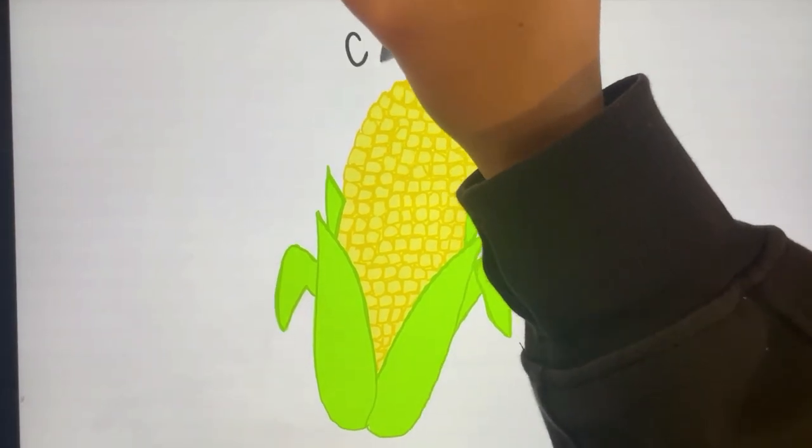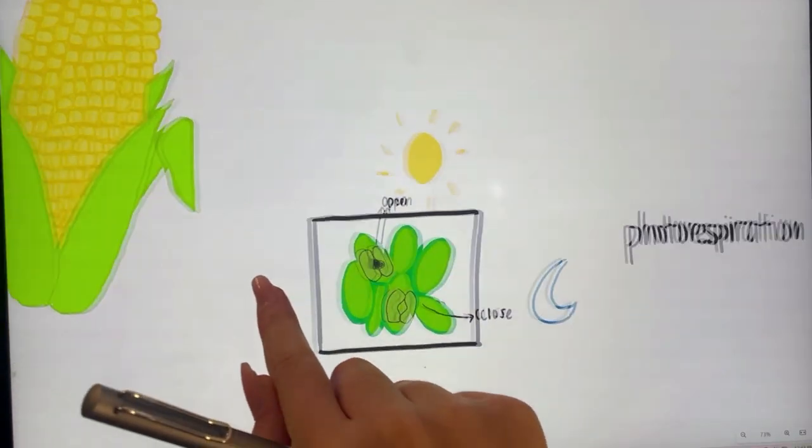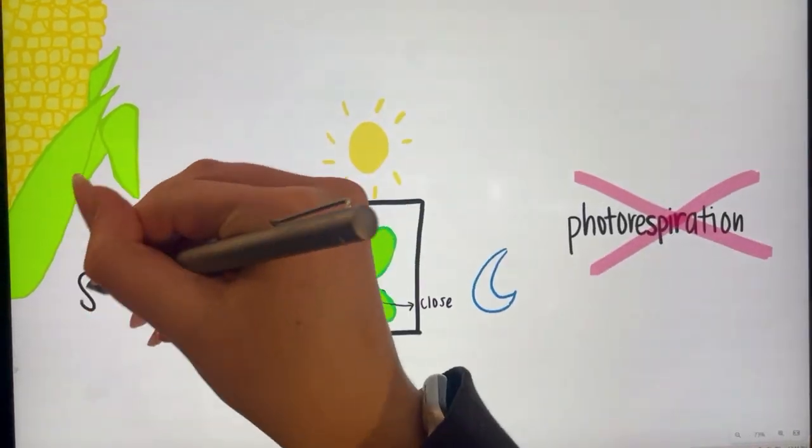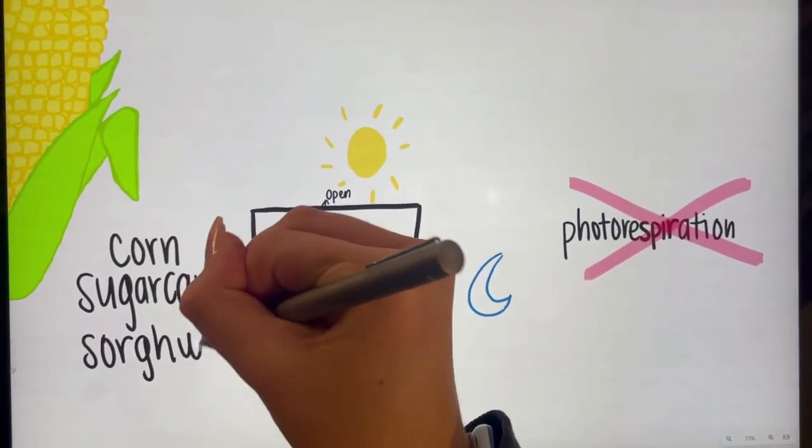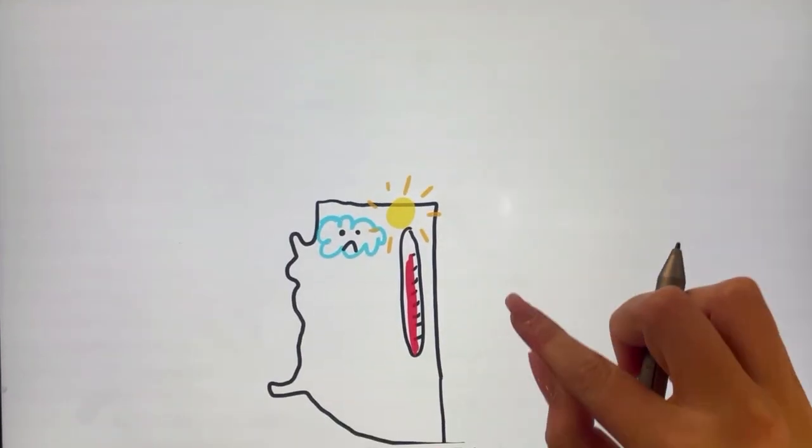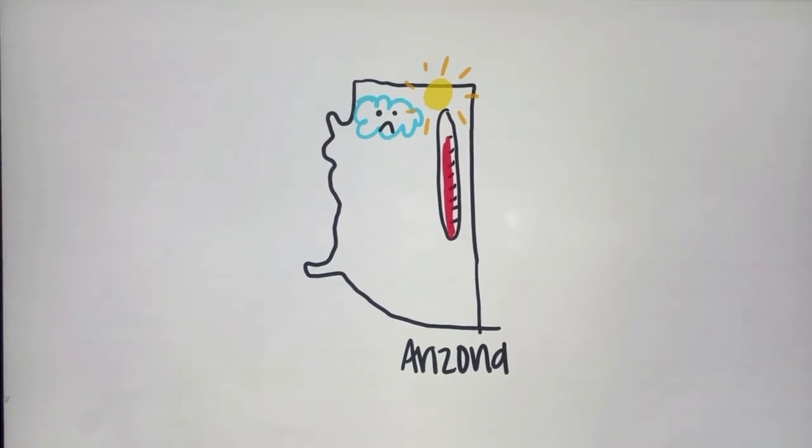One of these plants is a C4 plant. It alternates its pathway to eliminate photorespiration. Some of these plants are corn, sugarcane, and sorghum. They are common in hot, dry climates, which benefit the overall product of sugar by reducing these effects.